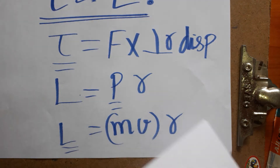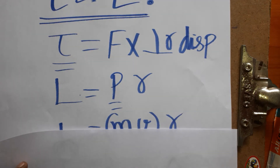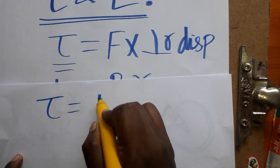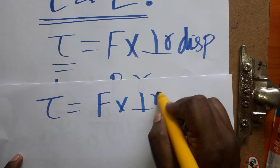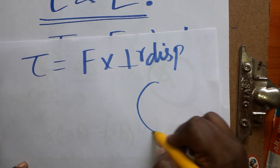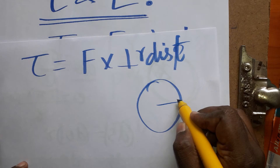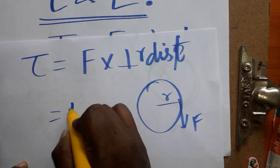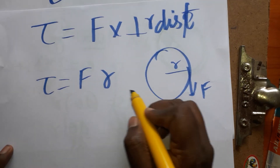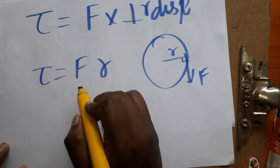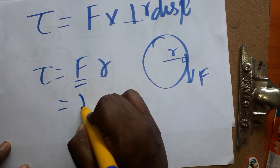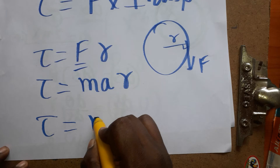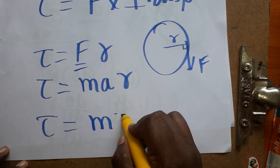First, we will derive torque in circular motion. Torque equals force times perpendicular distance. In circular motion, the perpendicular distance is the radius r, so torque equals F times r times sine theta. Since theta is 90 degrees, and force equals mass times acceleration, torque equals m times a times r.